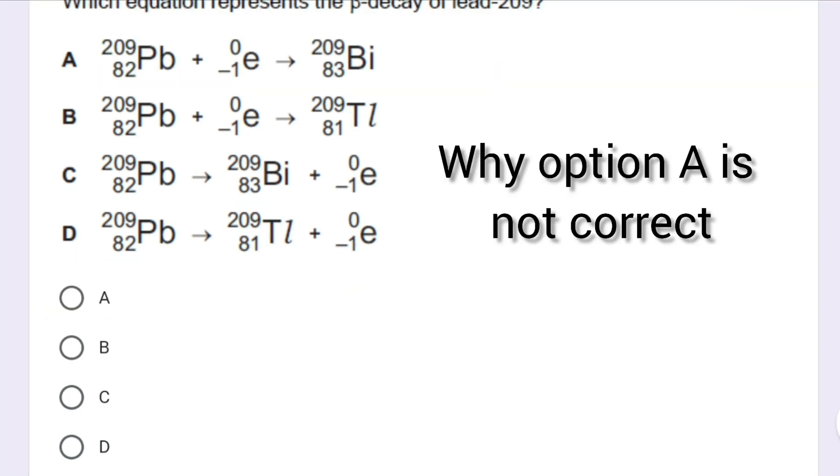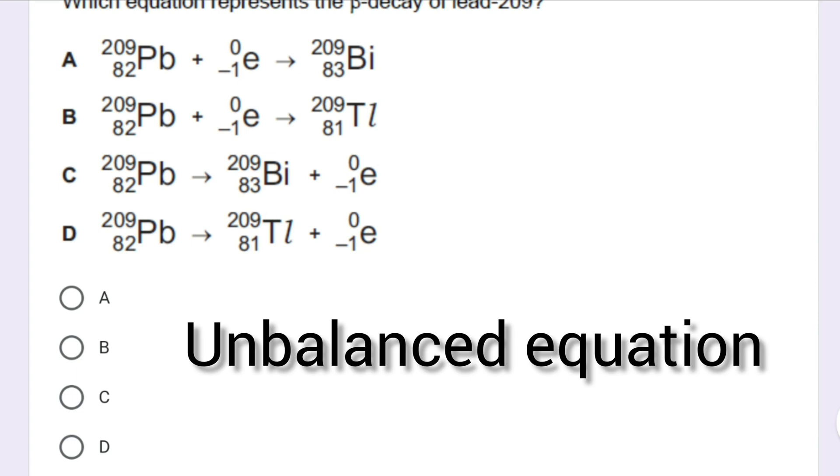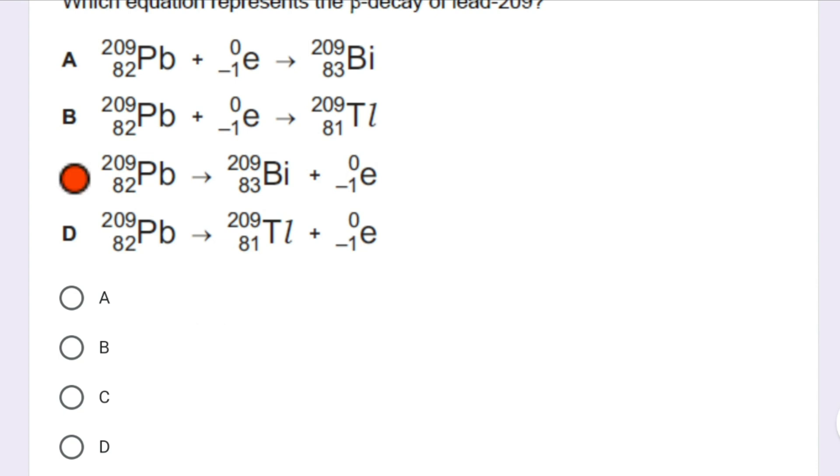Why is option A not correct? In option A, atomic mass is 209 and atomic number is 83. The problem is when you add the left side of elements in option A, it will be 209 and 81, whereas the right-hand elements will be 209 and 83, which is an unbalanced equation. In radioactive emission, the equation should be balanced. In option C, the left side is 82 and 209, whereas the right side is also 83 minus 1 equals 82 and 209. So option C is the balanced equation.